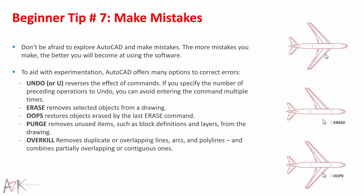Beginner Tip 7 – Make Mistakes. Don't be afraid to explore AutoCAD and make mistakes — the more mistakes you make, the better you will become at using the software. AutoCAD offers many options to correct errors: Undo (U) reverses the effect of commands and you can specify the number of preceding operations to undo. Erase removes selected objects. Oops restores objects erased with the last Erase command. Purge removes unused items such as block definitions and layers. Overkill removes duplicate or overlapping lines, arcs and polylines, and combines partially overlapping or continuous ones.